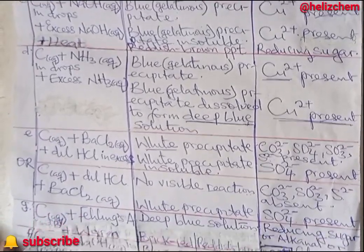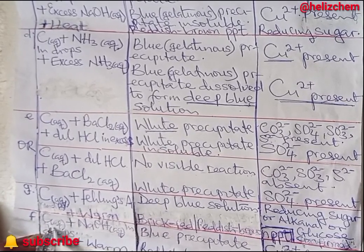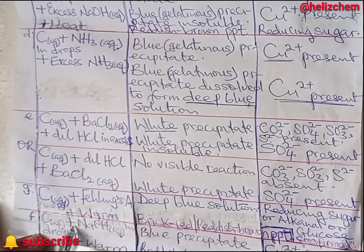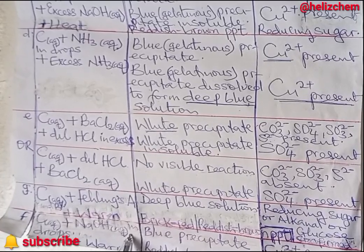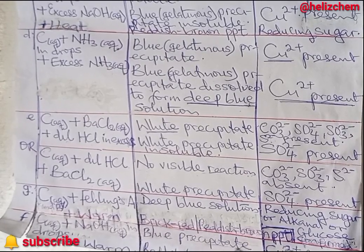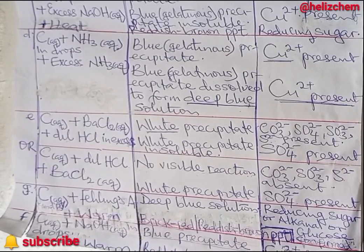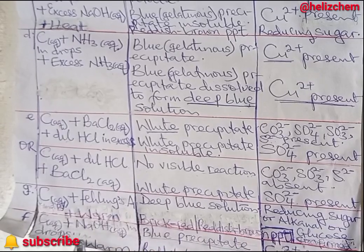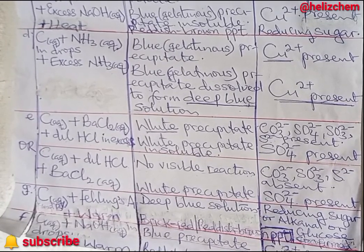Test F: To the HCl solution of C, add sodium hydroxide solution in drops. You will notice a blue gelatinous precipitate, which also shows the presence of copper(II) ions. But when you now warm it, you will notice a reddish brown precipitate, which shows that there is reducing sugar present in that solution.